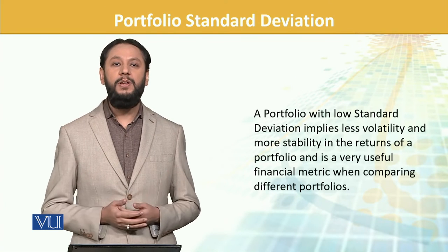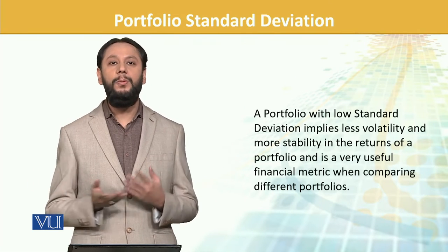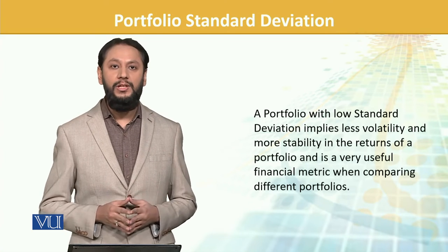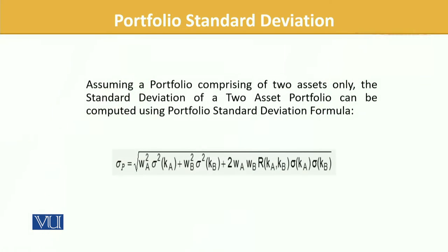When we have multiple portfolios to compare, whichever has the lower standard deviation — that is the gauge. Assuming a portfolio comprising of two assets only, the standard deviation of a two-asset portfolio can be computed using the formula that we add on and calculate the values of the standard deviation for a portfolio.